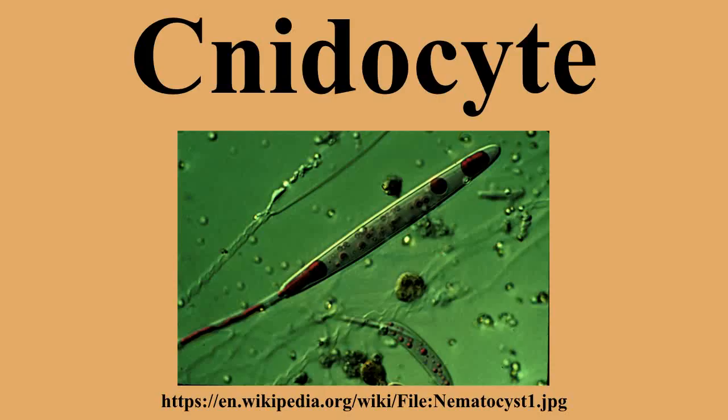The externally oriented side of the cell also has a hair-like trigger called a Snidocel. Snidocel is a mechano- and chemoreceptor. When the trigger is activated, the tubule shaft of the Snidocyst is ejected, and in the case of the penetrant nematocyst, the forcefully ejected tubule penetrates the target organism.